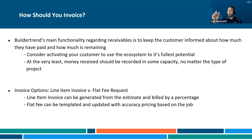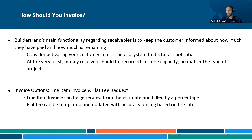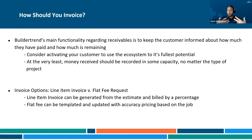When your customer logs in, they're going to be able to see their job running total — which is the contract amount, plus any additional costs that came up through a change order, or maybe they've gone over their allowances through BuilderTrend selections. So at what point do you go about and actually request your money? There are two ways to do that in BuilderTrend: you can use a line item invoice — going back to the running theme of cost codes — or you can do a flat fee invoice, which is just a lump sum with a general description of what you're requesting money for.